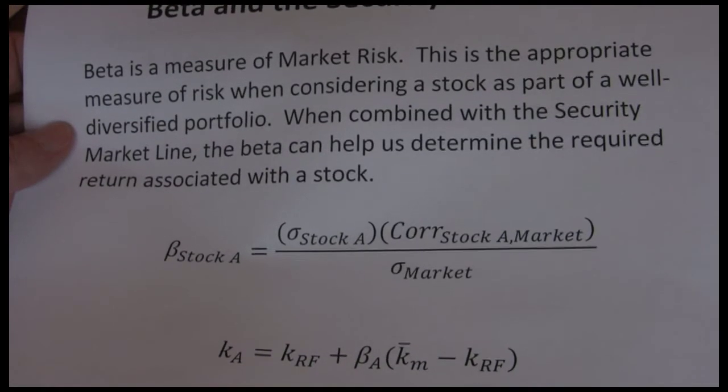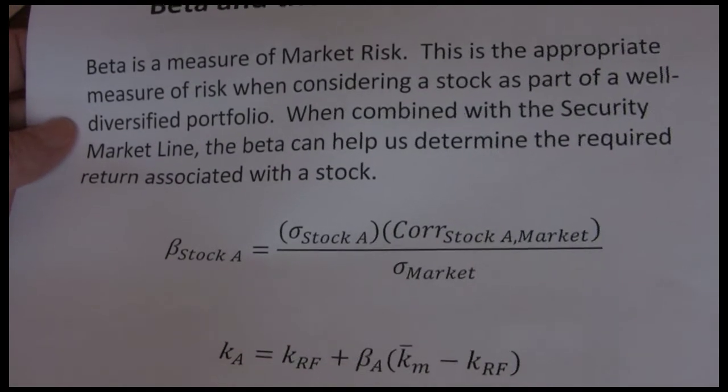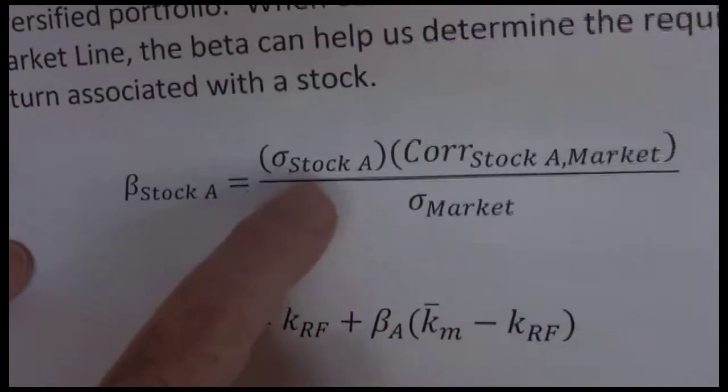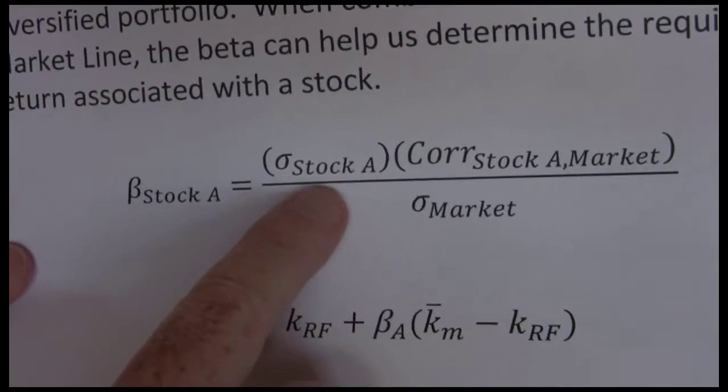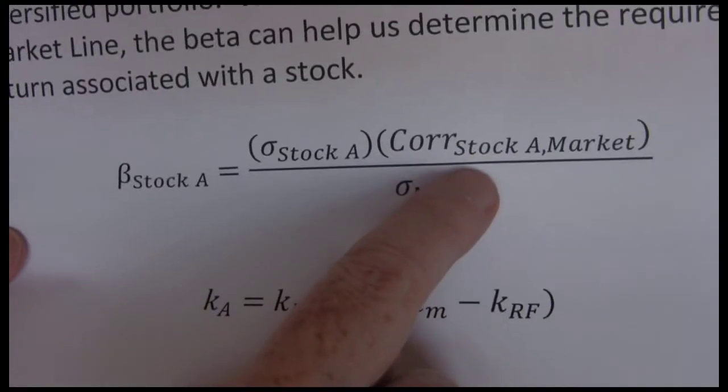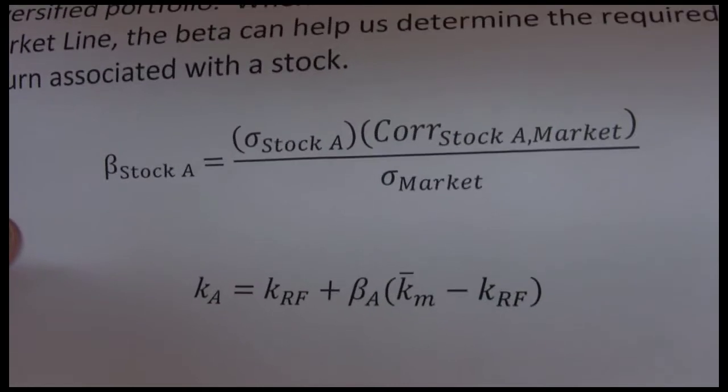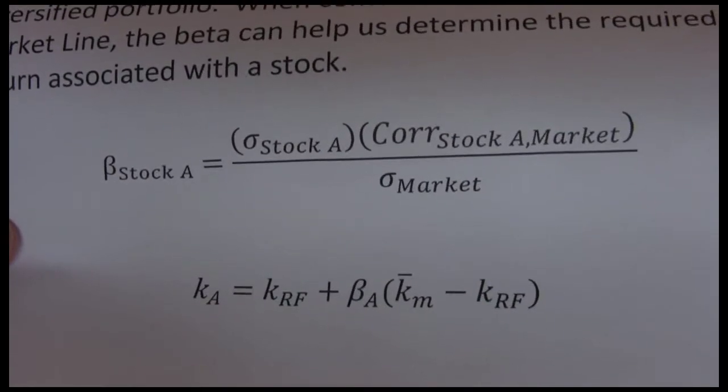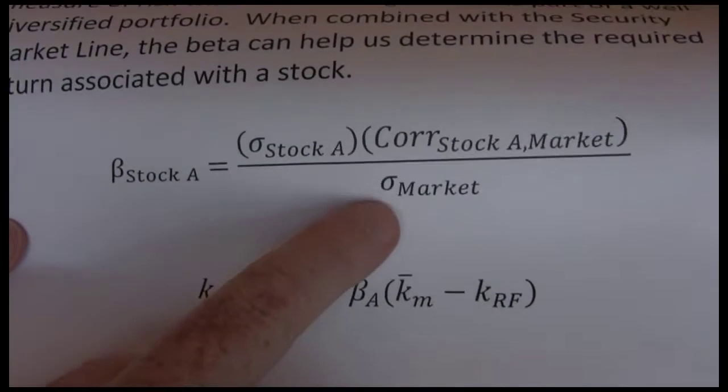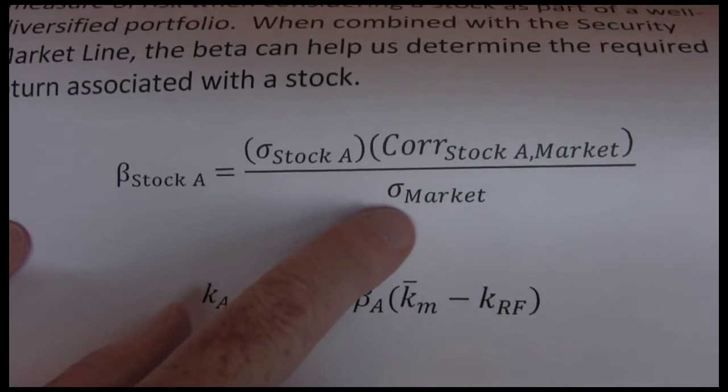So what rate of return do we need in order to make that a worthwhile investment. Our formula for beta is we take the standard deviation of the stock times the correlation between the stock and the overall market and we typically use the S&P 500 as a measurement of the market divided by the standard deviation of the market.